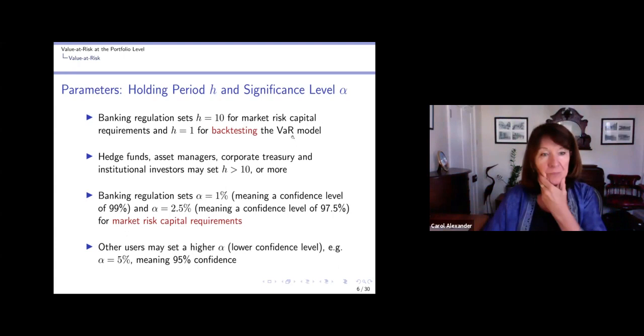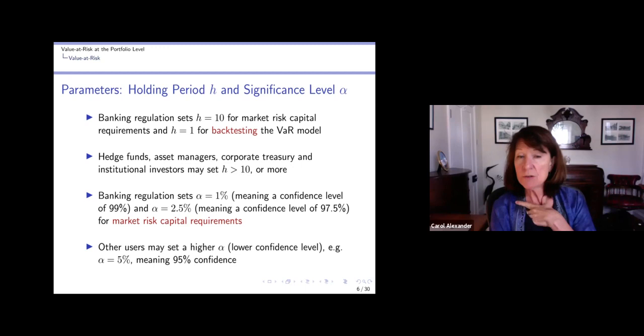So how do we set those parameters? For banking regulations, we have to set h equals 10 in order to measure market risk capital requirements—we'll get onto that in the very last topic of this module. But when we back-test the value at risk model, we have to set h equals 1 for daily. So the models are built and they're tested on daily data and daily P&L.